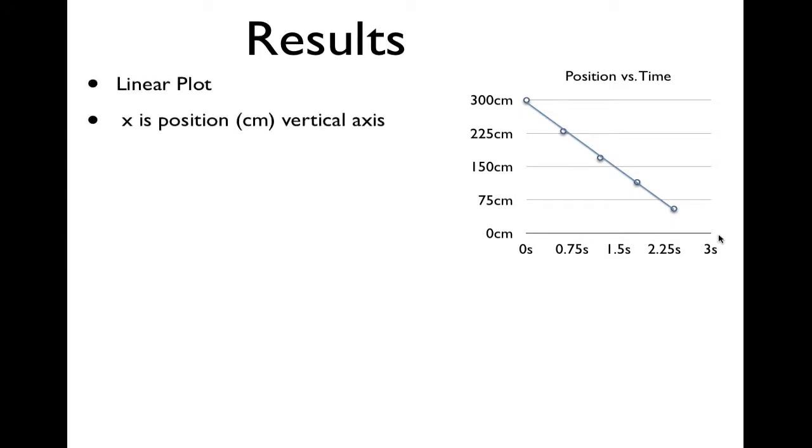We got a linear plot. We labeled the variable x as our vertical variable, and it means the position in centimeters measured on the vertical axis. We measured time in seconds on the horizontal axis. The position is in centimeters, and the time is in seconds on the horizontal axis.